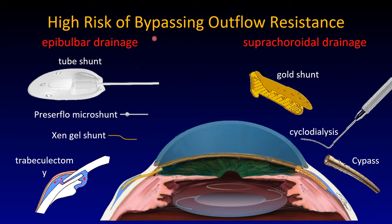Here is a list of high-risk approaches: you can bypass everything. There is an Ahmed glaucoma drainage device, a Preserflo micro-shunt connecting the anterior chamber with a reservoir under the conjunctiva, and the Xen gel shunt doing the same thing — though less reliably, as it has to be placed from the internal approach. It can also be placed externally but tends to migrate. And of course classical trabeculectomy.